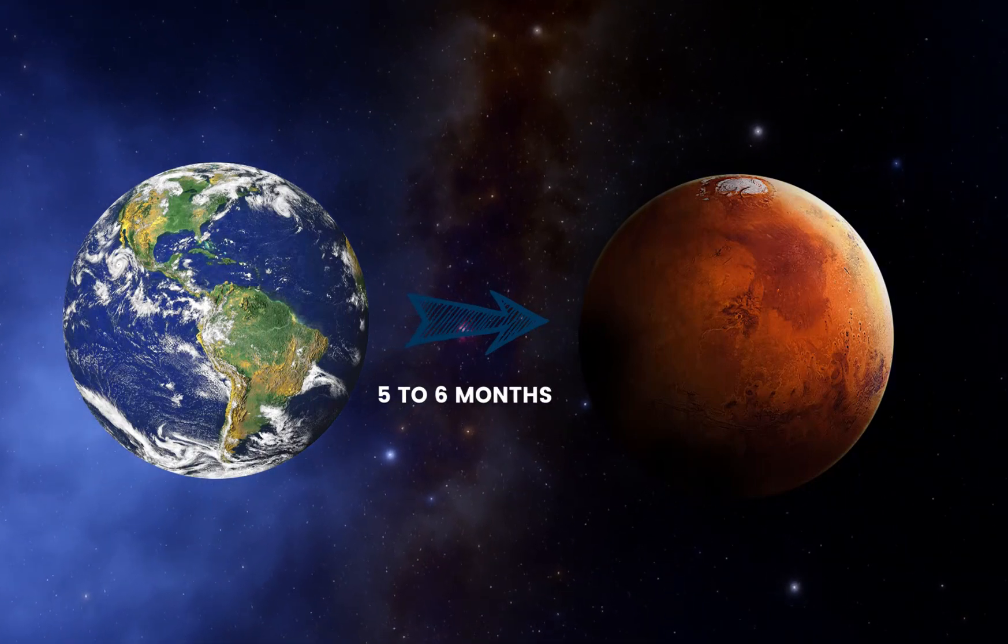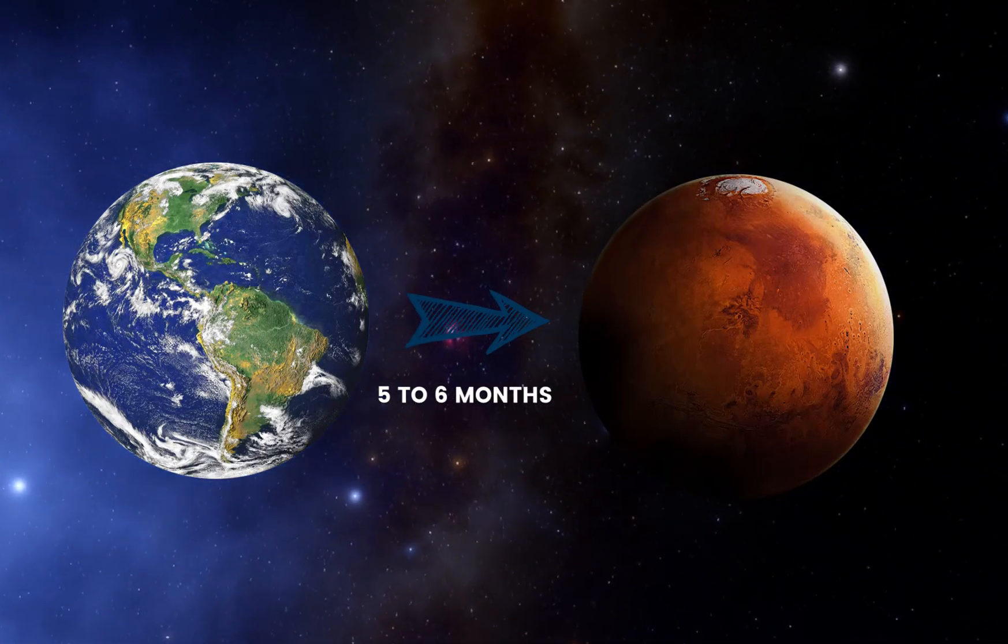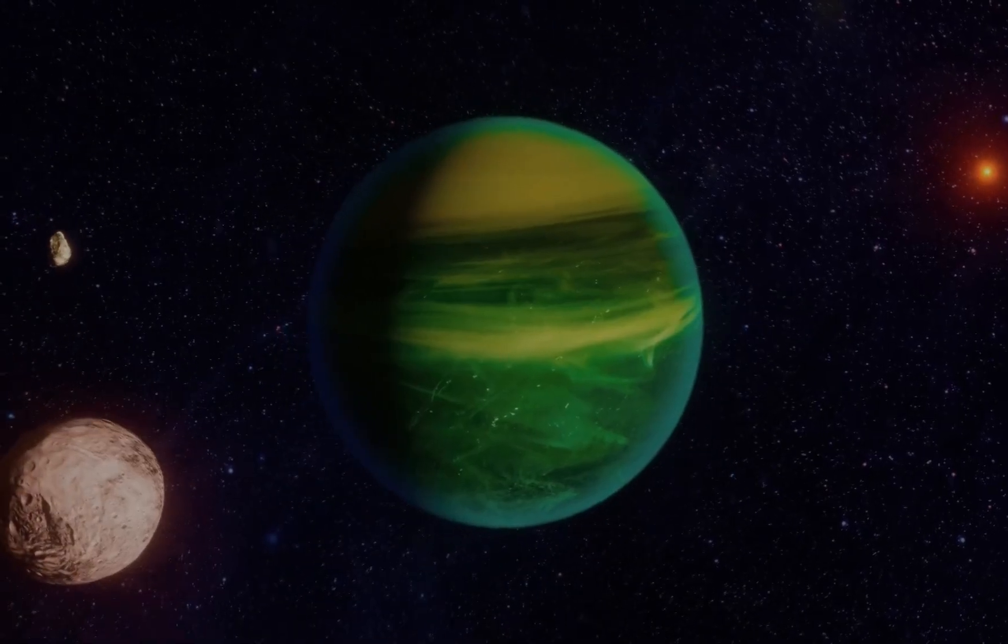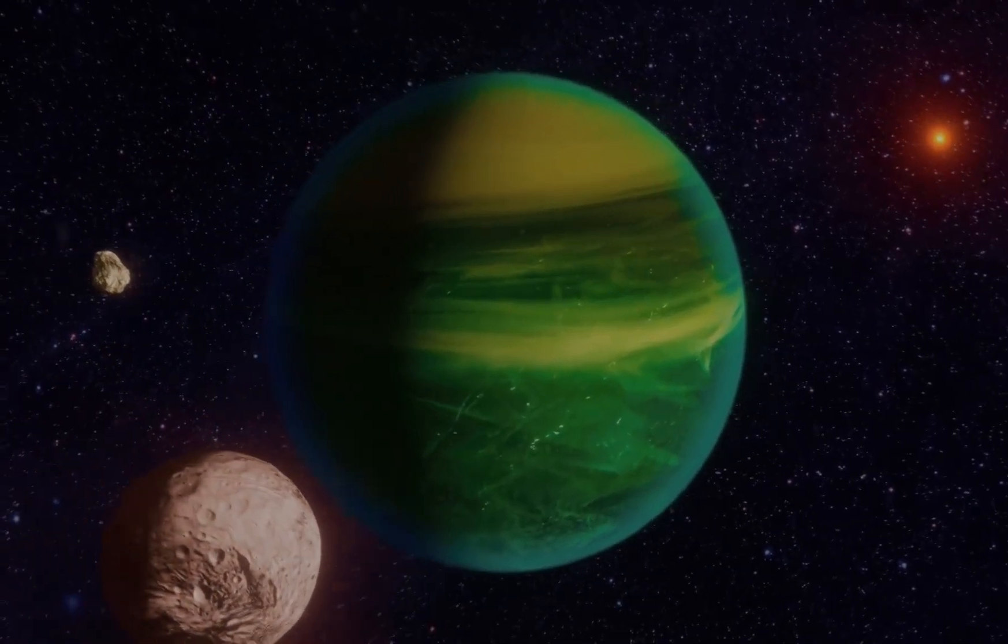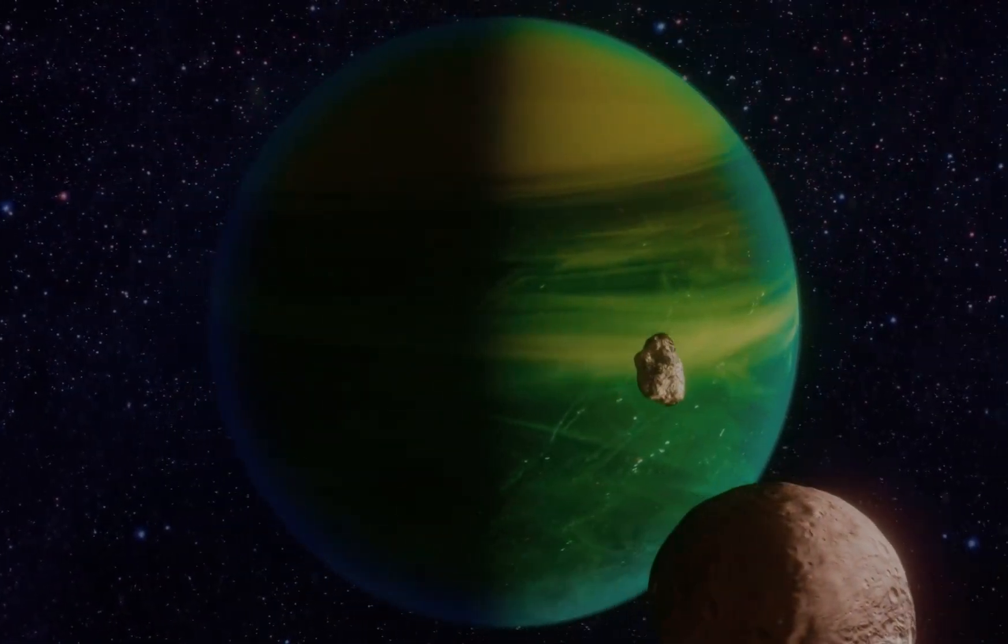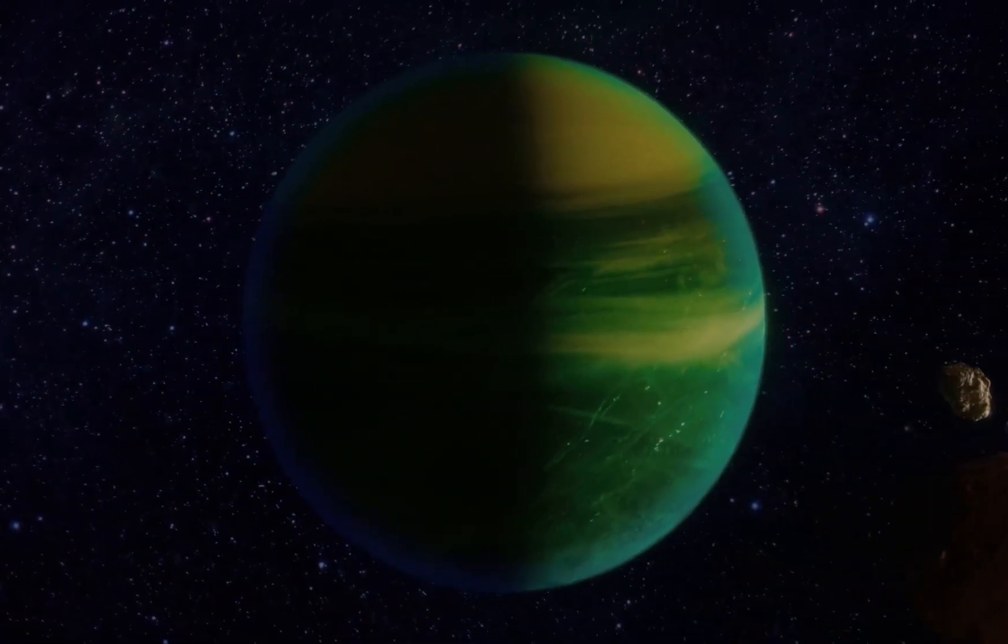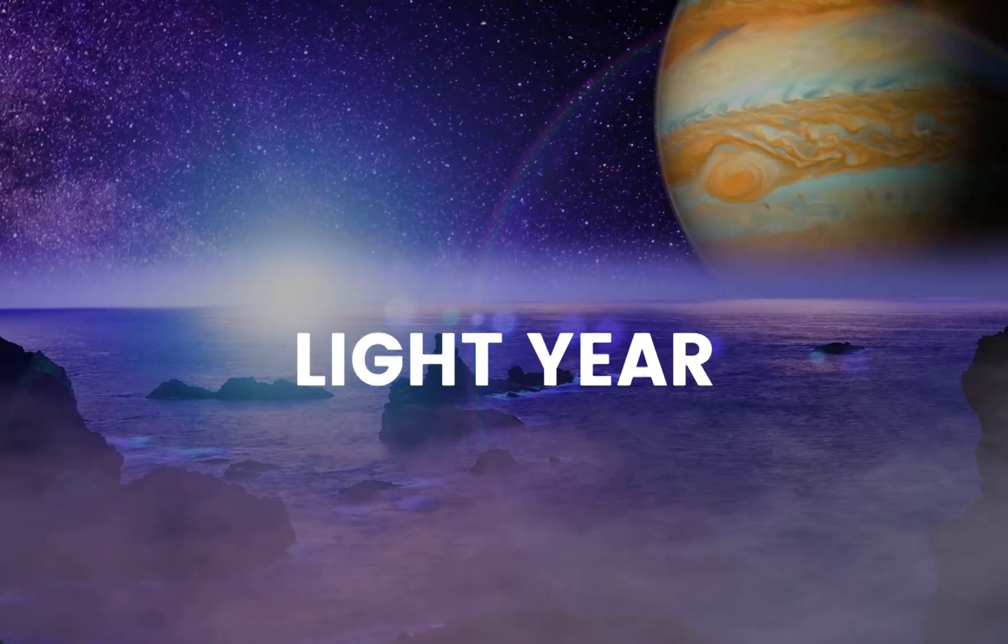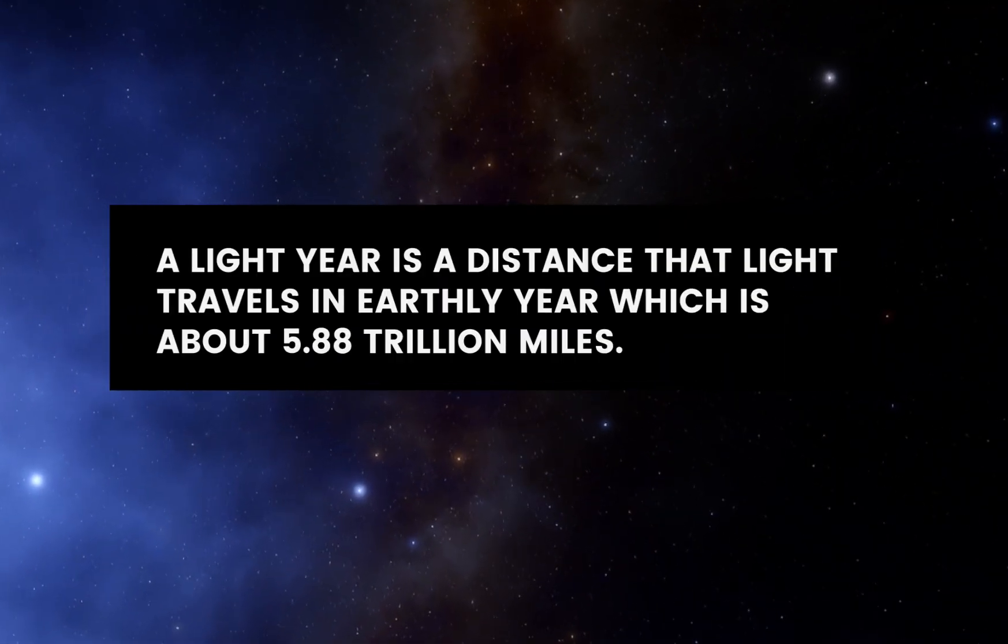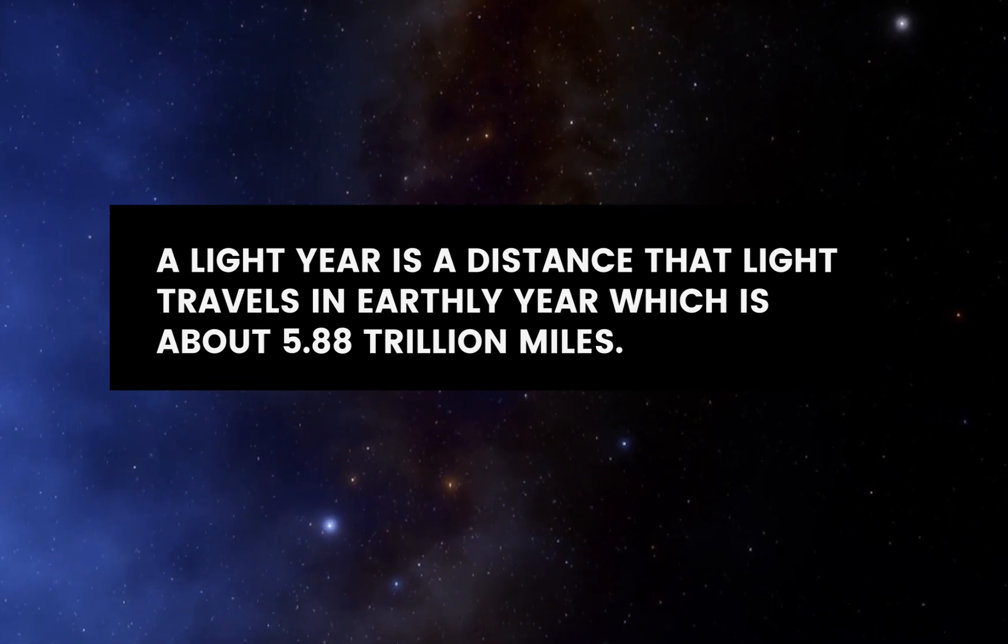It takes about five to six months to reach Mars, which is one of the nearest planets to the Earth. Imagine how much time it would take to explore galaxies and planets that are far beyond our solar system. The distances are so long that we had to come up with a special unit for it, which is the light year. A light year is a distance that light travels in an earthly year, which is about 5.88 trillion miles.